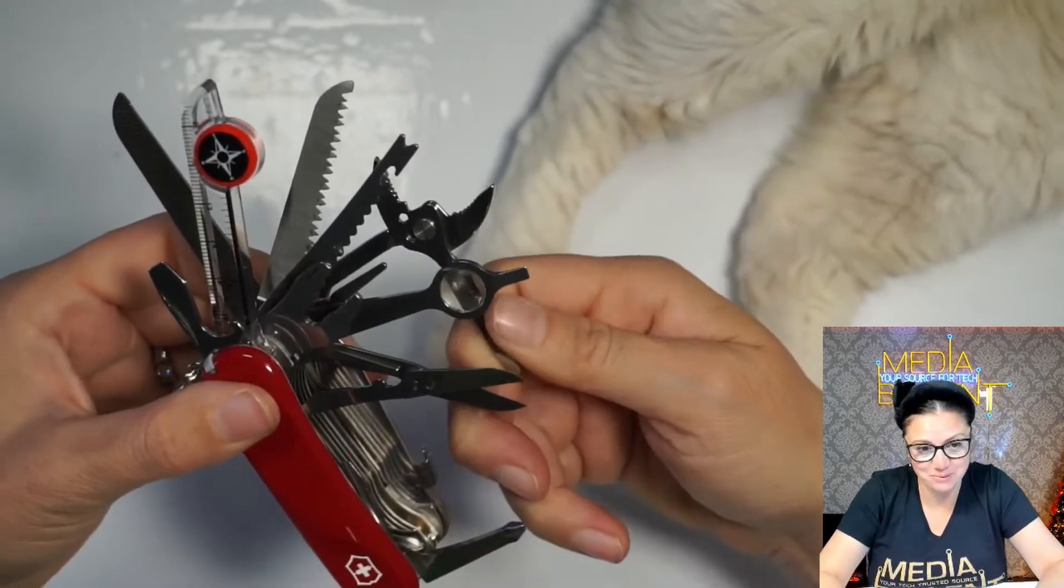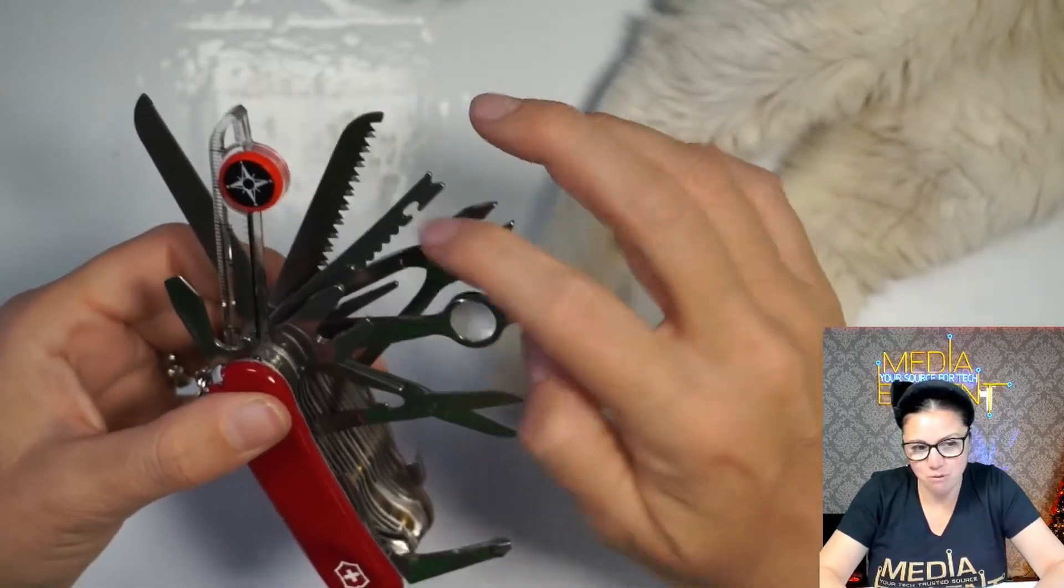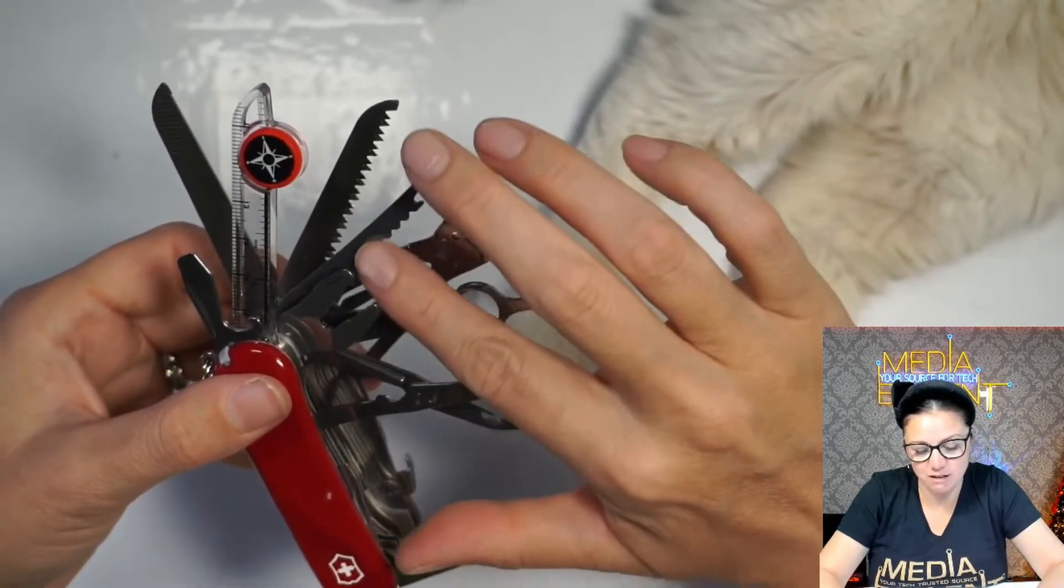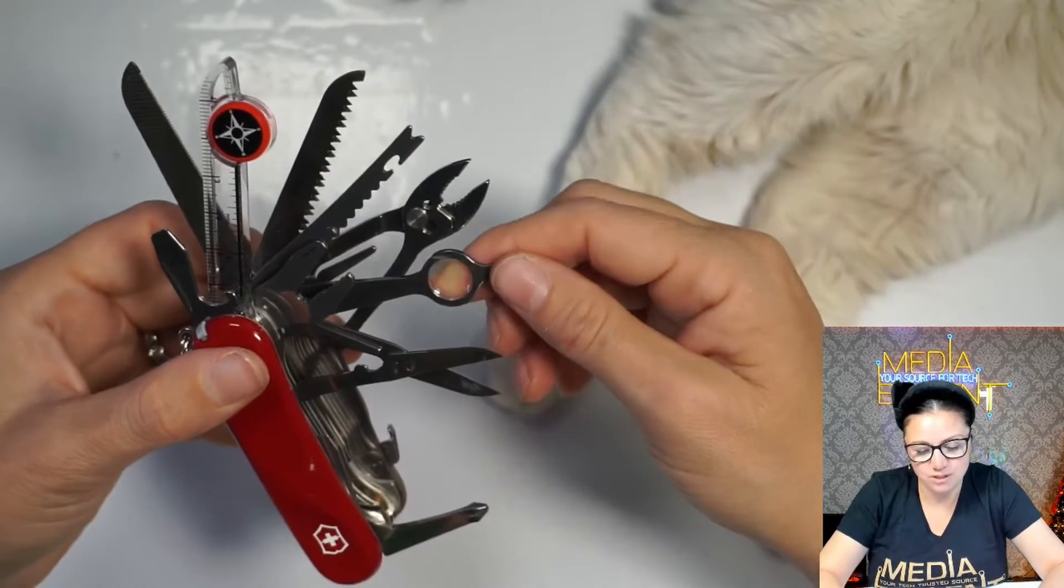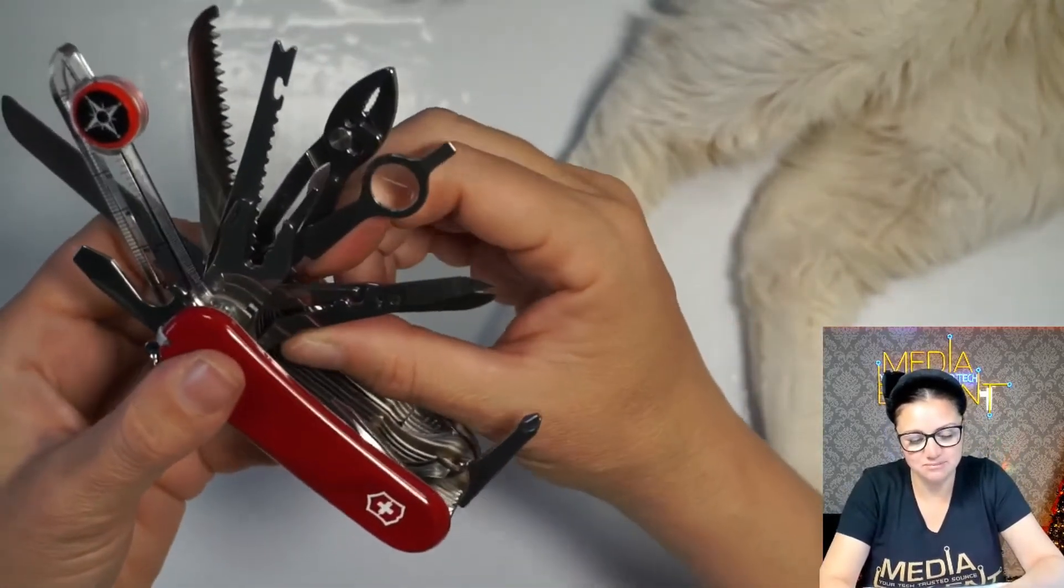We have this one, I almost shot this. A fishing hook from here, this might be a scaler for fishing. We also get the magnifying glass. The scissor, super convenient right here.